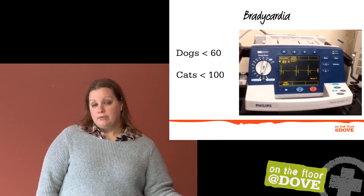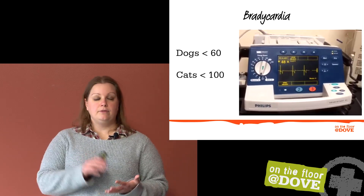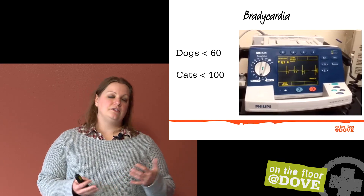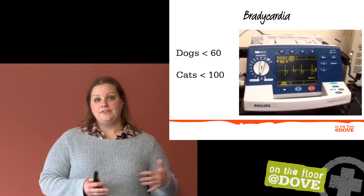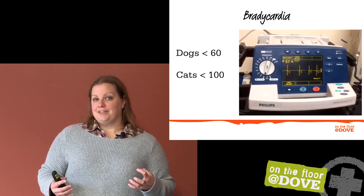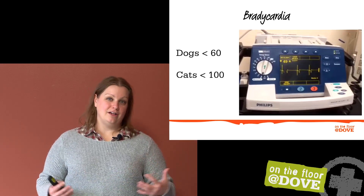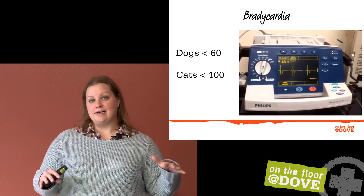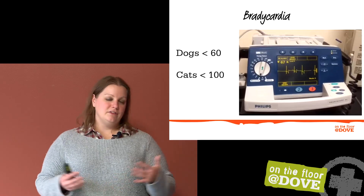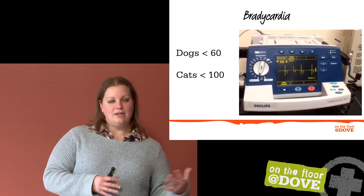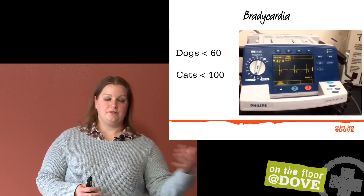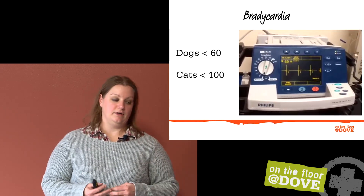Now let's switch gears and think about bradycardia under anesthesia. For dogs, when they get less than 60 beats per minute, I consider them bradycardic. Cats are never allowed to get below 100 for me. Cats really don't have a lot of reserves to manage bradycardia, so I have a hard and fast line at 100 with cats. Dogs, if they hang out at 56 and everything else looks okay I may allow it, but with cats don't let them get too slow — they'll just continue to drop until you've gone to the bad place.